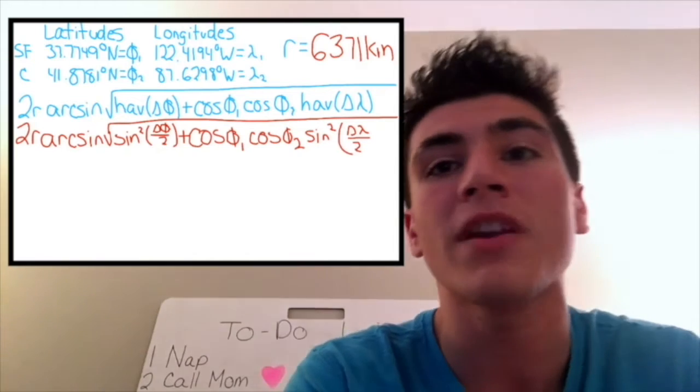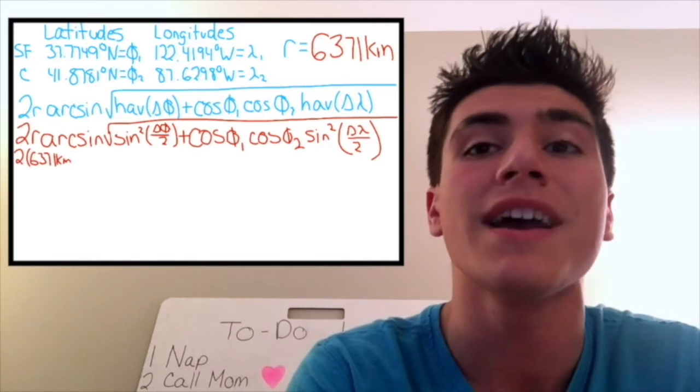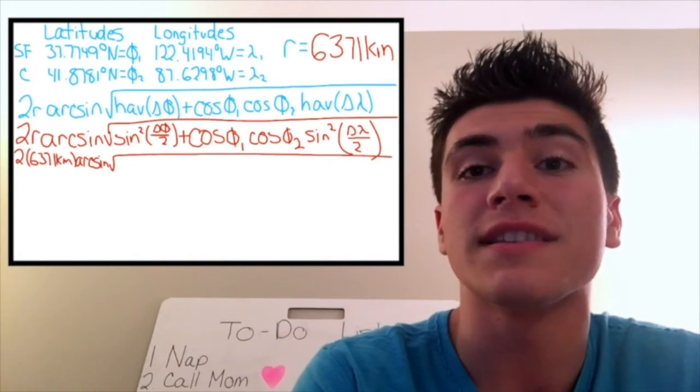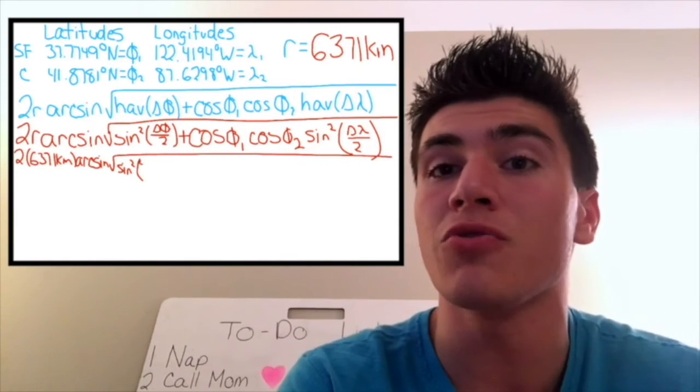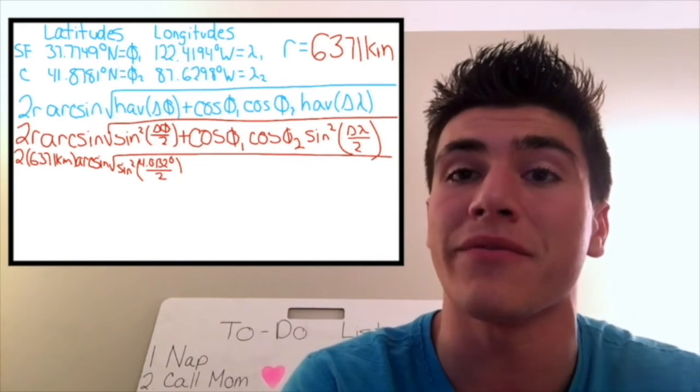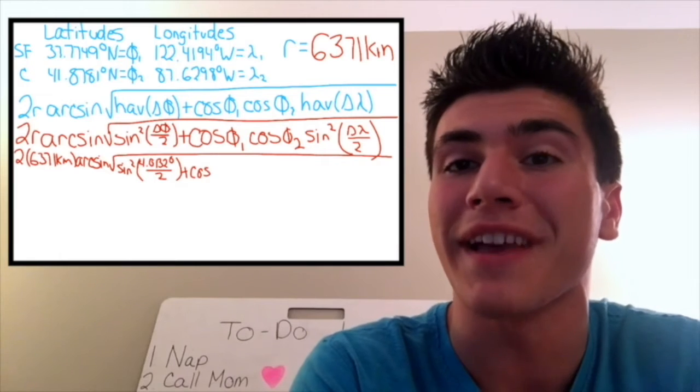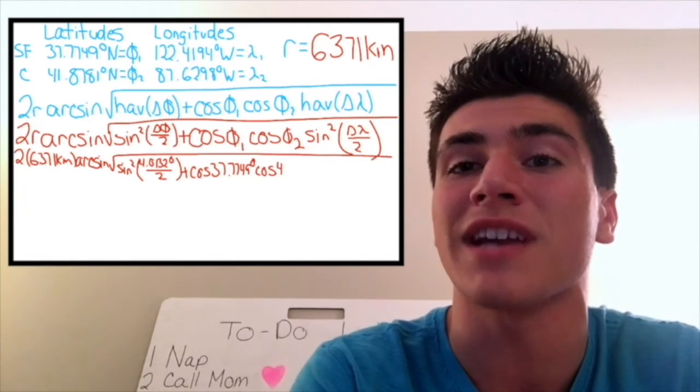divided by 2. So now, plugging in variables, we have 2 times 6,371 kilometers, times the angle whose sine is the square root of sine squared. And now, Delta Phi is Phi-2 minus Phi-1, so the latitude of Chicago minus the latitude of San Francisco, in degrees, divided by 2, plus cosine of the latitude of San Francisco, times the cosine of the latitude of Chicago,